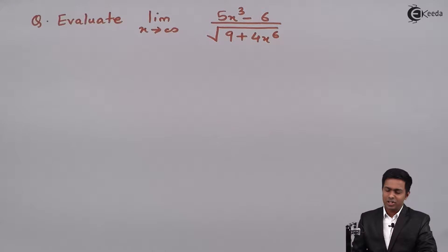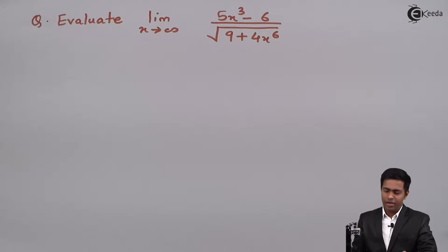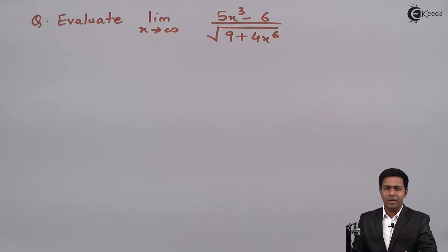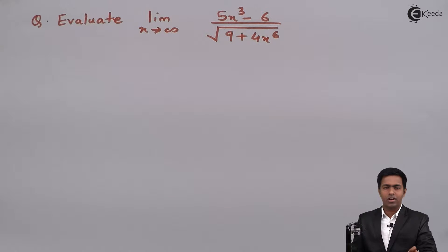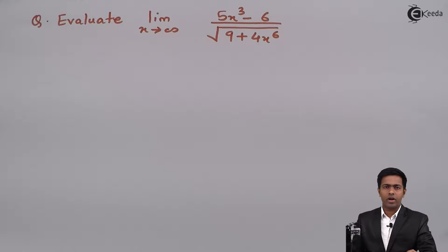Hello friends. In this problem we have to evaluate the limit as x tends to infinity of 5x cubed minus 6, all divided by the square root of 9 plus 4x raised to the power 6.